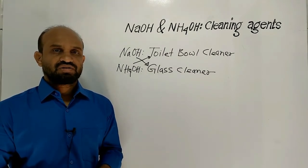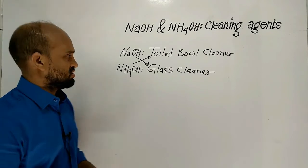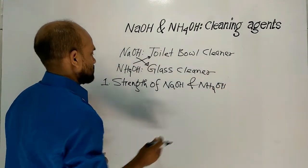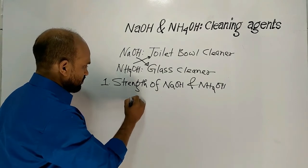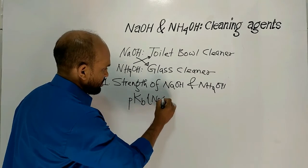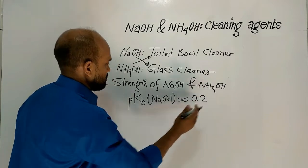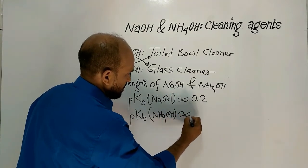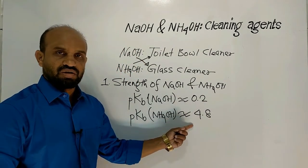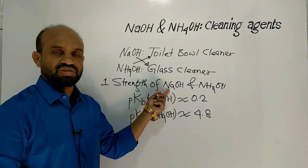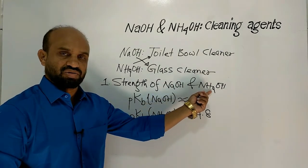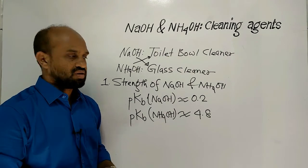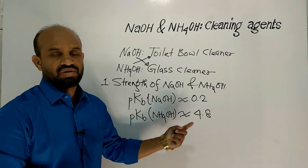The first point is the strength of sodium hydroxide and ammonium hydroxide. The pKb of sodium hydroxide is around 0.2 and the pKb of ammonium hydroxide is around 4.8. From this data we can say that sodium hydroxide is much stronger than ammonium hydroxide. The smaller the pKb value, the stronger the base; the higher the pKb value, the weaker the base.